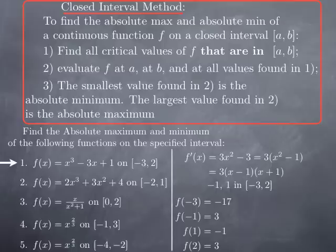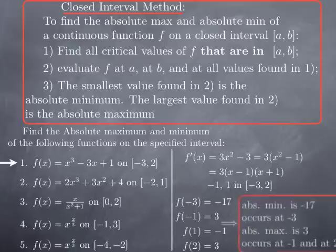The smallest value is -17, therefore this is the absolute minimum, and it occurs at -3. The largest value is 3, therefore the absolute maximum is 3, and it occurs both at -1 and at 2.